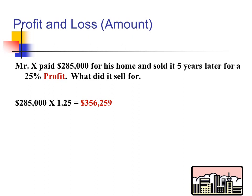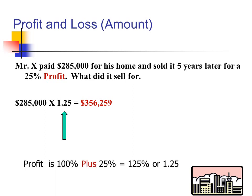Profit and loss amount — here's computing the amount of profit or loss given the percent of profit or loss. Mr. X paid $285,000 for his home and sold it five years later for a 25% profit. What did he sell it for? We take what we originally paid, $285,000, and multiply it by 1.25 — that's 100% for what we bought the property for plus the profit of 25%, or 125%, which is the same as 1.25. So 1.25 times $285,000 would be $356,250.